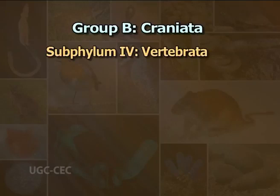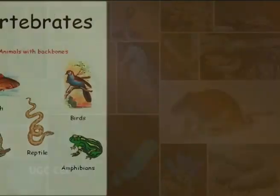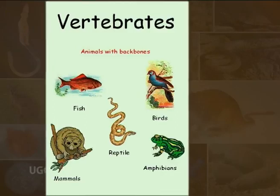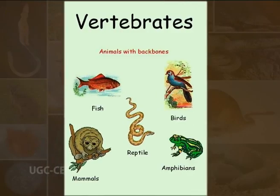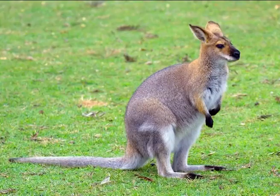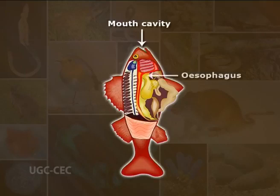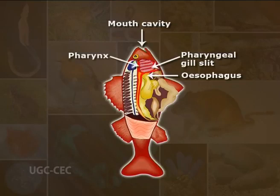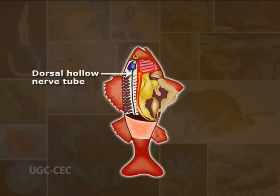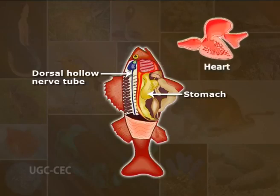Sub-phylum 4: Vertebrata — in Latin, vertebrata means backbone. The main character of this sub-phylum is the notochord, supplemented or replaced by a vertebral column or backbone comprising overlapping vertebrae. Body is divisible into head, neck, trunk and tail. Vertebrates have a well-developed brain. They possess a dorsal hollow nerve tube at some stage of their life. Digestive canal is more or less convoluted. They have a partially open circulatory system. Reproduction is normally sexual. Vertebrata is the largest sub-phylum, including about 45,000 species.